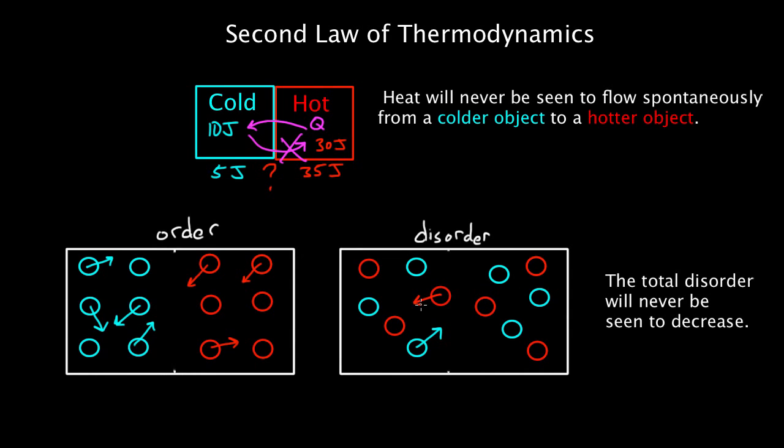This particular state is just as likely as this other particular state, but there are so many more mixed up states than there are separated states. Even though any particular state is just as likely, since the mixed up states vastly outnumber the separated states, if you pick one at random, it's gonna be a mixed up state because there are so many more of them.